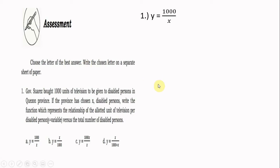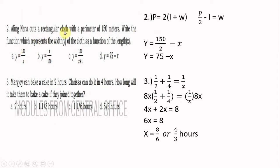Number one: the government wants to give 100,000 units of television to disabled persons in Quezon province. If the province has X disabled persons, write a function which represents the relationship of the allotted units of television per disabled person Y versus the total number of disabled persons X. The answer is Y equals 100,000 divided by X.